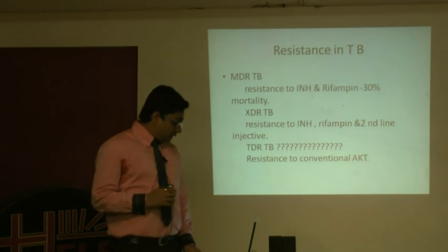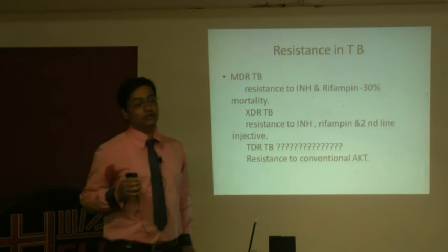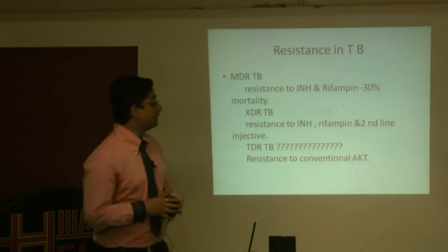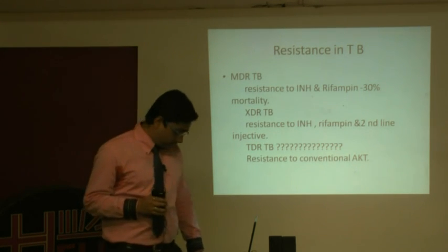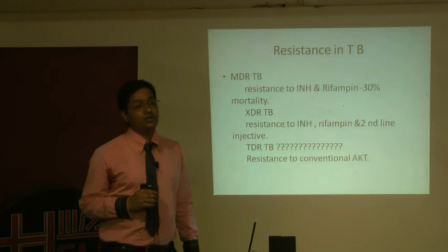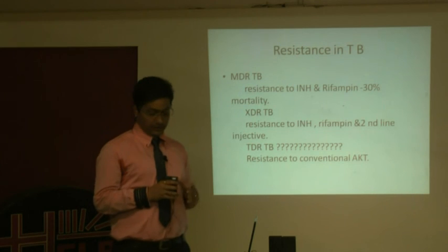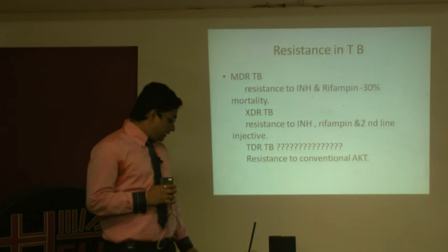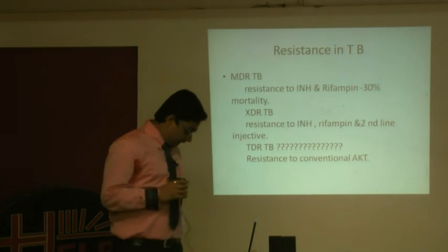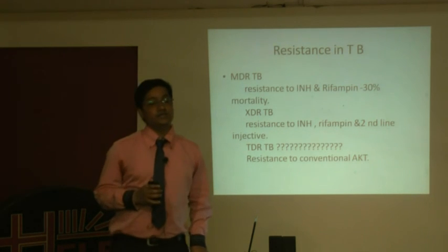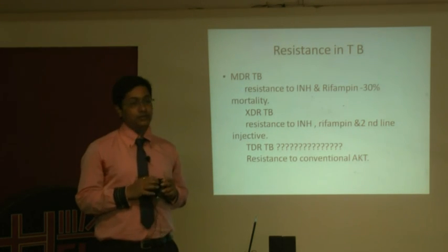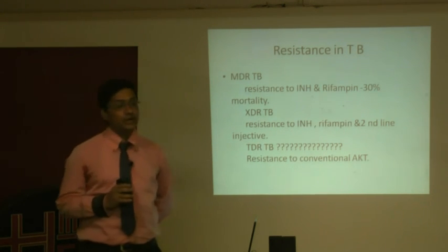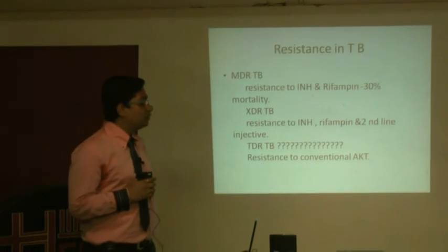In tuberculosis resistance, there is mono-resistance, where the bacteria are resistant to only one drug — isoniazid or rifampicin. There is also cross-resistance, where resistance to one drug leads to resistance to structurally similar drugs. Multi-drug resistant tuberculosis was first noted during the 1990s in New York, where many cases of tuberculosis were found in which the bacteria were not responding to the two best first-line drugs.